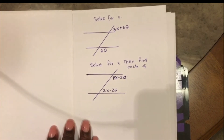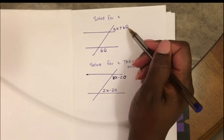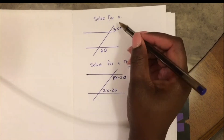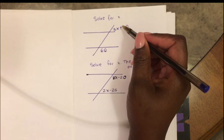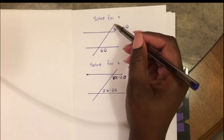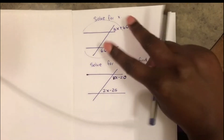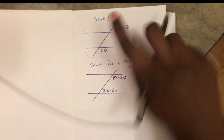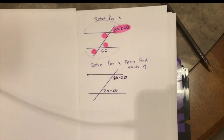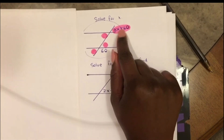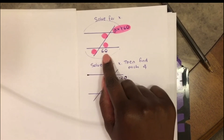For this problem I'm going to do the same exact thing, but first I want to figure out the angle relationship between the angles they gave me. They're both on the exterior — the outside of the parallel lines — and they're on the same side of the transversal. So they're on the outside and on the right side of the transversal.